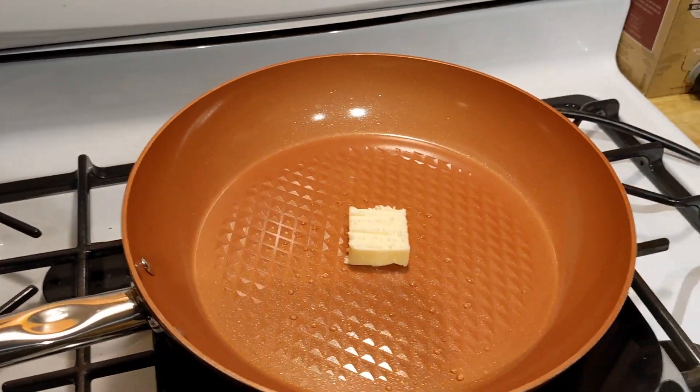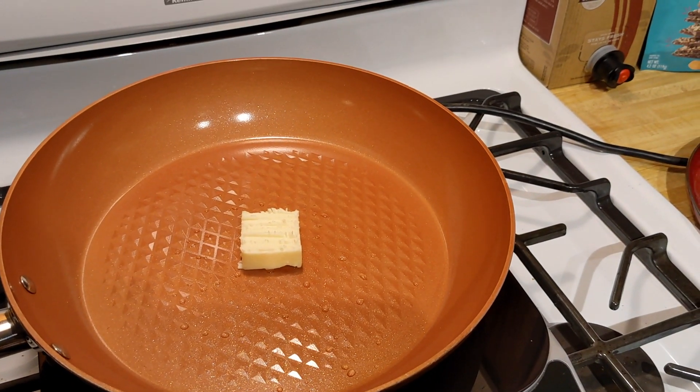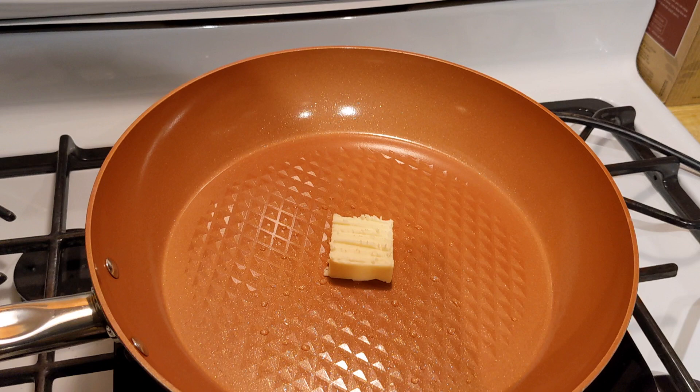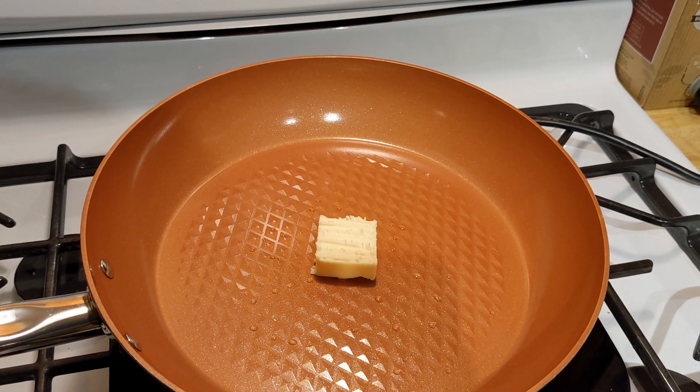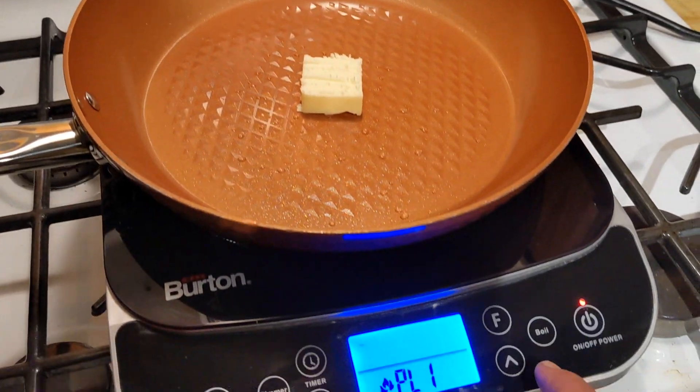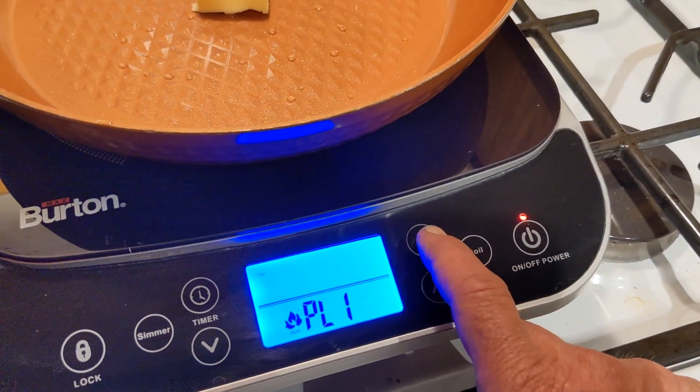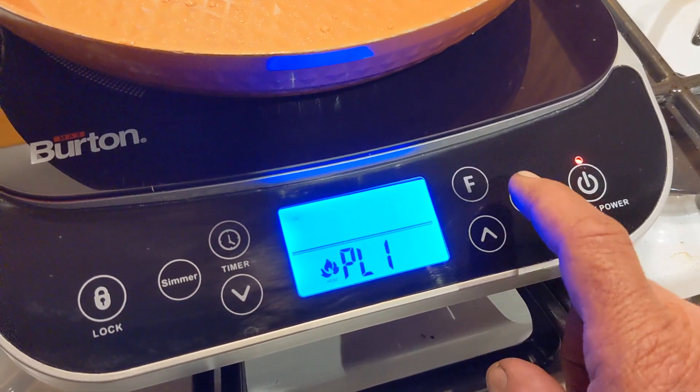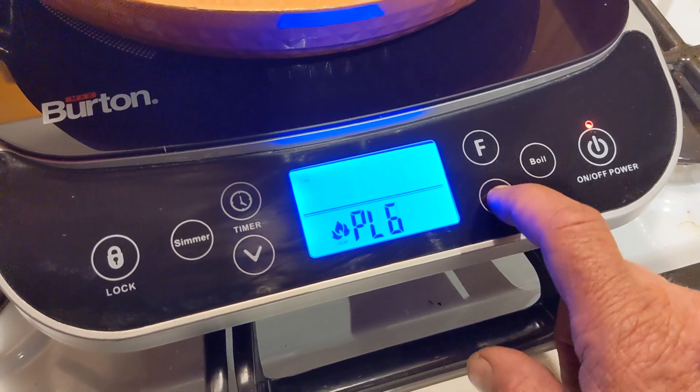If you're vegan, it chars vegetables really nicely - you can do all kinds of stuff. But I apologize if you are offended by meat. Turn it on. Now you can set this to temperature and pick a temperature, or you can do that and just do one through ten.